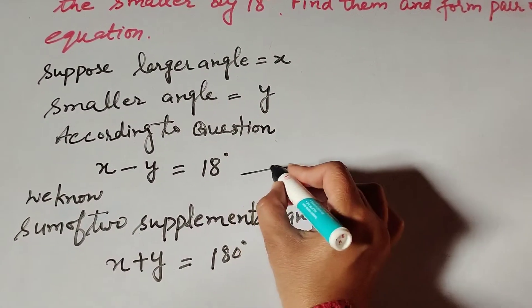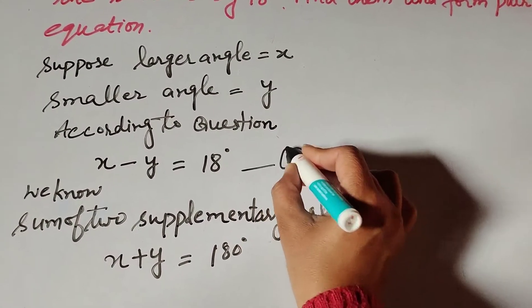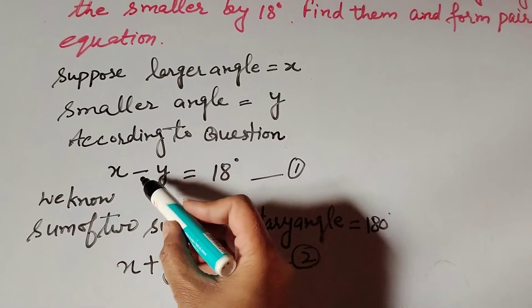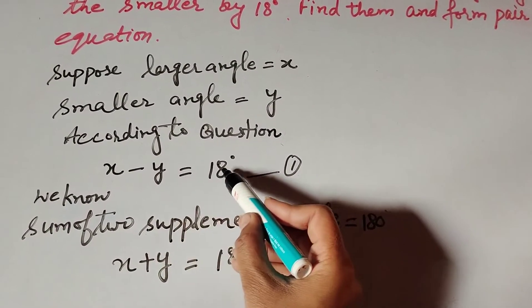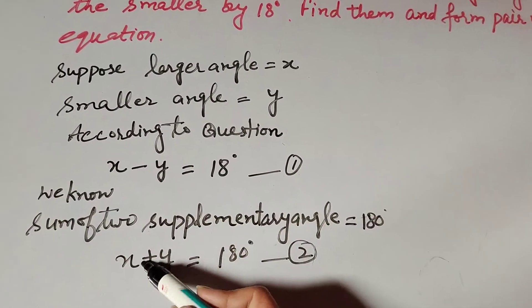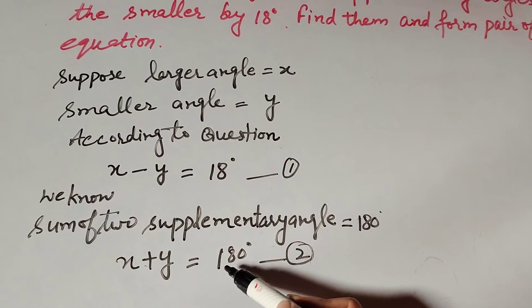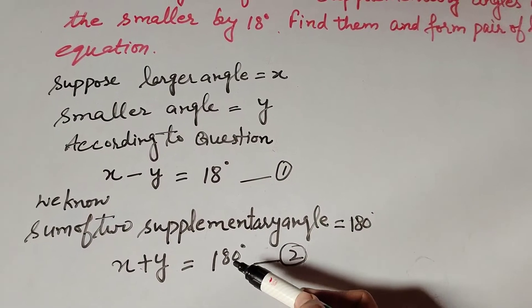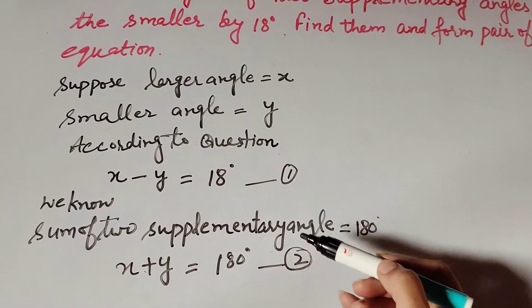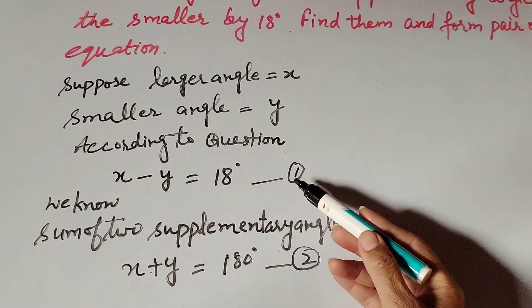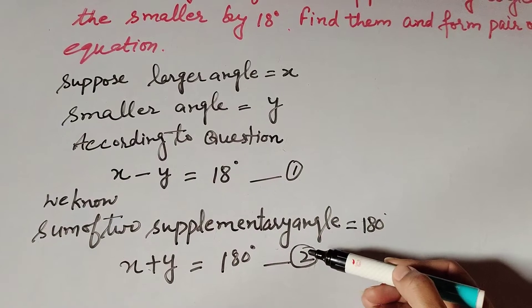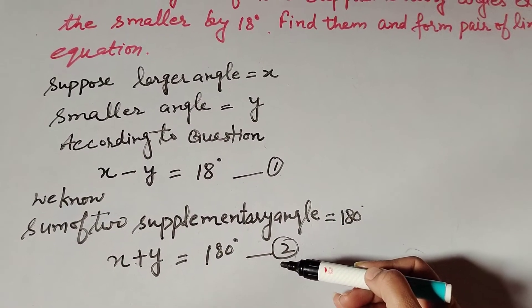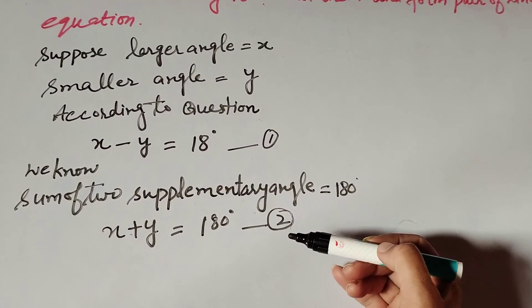This is equation number one: x minus y equals 18. And this is equation number two: x plus y equals 180. These are a pair of linear equations.